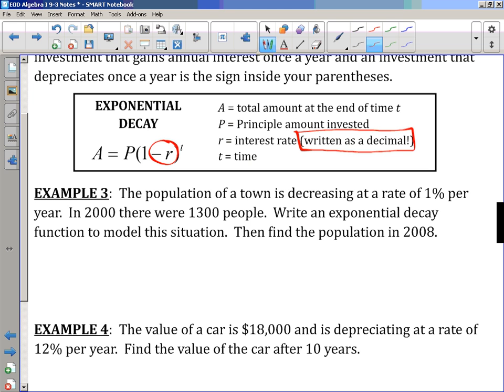So, let's look at an example. The population of a town is decreasing, so we need to be looking for those kinds of key words there, decreasing, at a rate of 1% per year. In 2000, there were 1,300 people. Write an exponential decay function to model the situation, then find the population in 2008. So, first, we're going to write a function. That basically means we're going to have t in our equation. So, our principle, it's where things start. Our principle is going to be this 1,300 people. Now, we're not talking about money anymore, we're talking about people, but what we do is very similar.